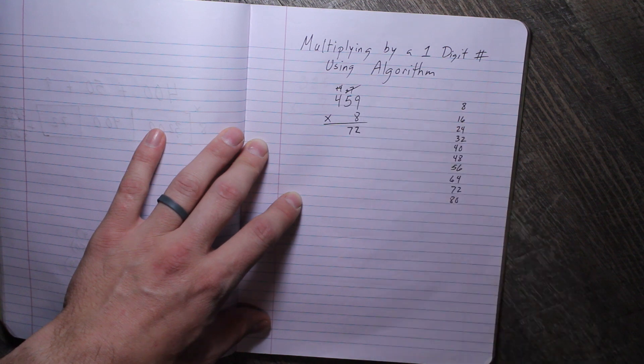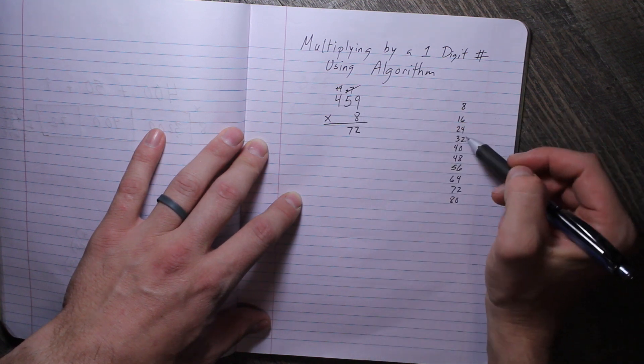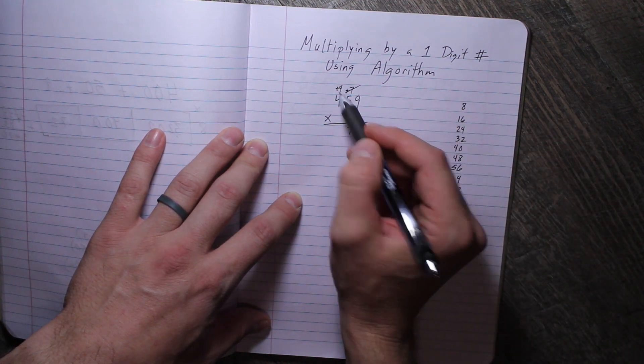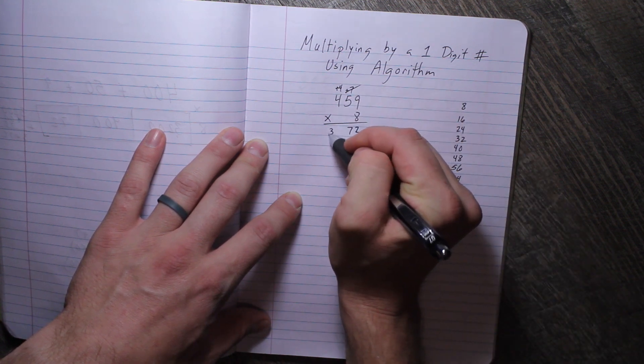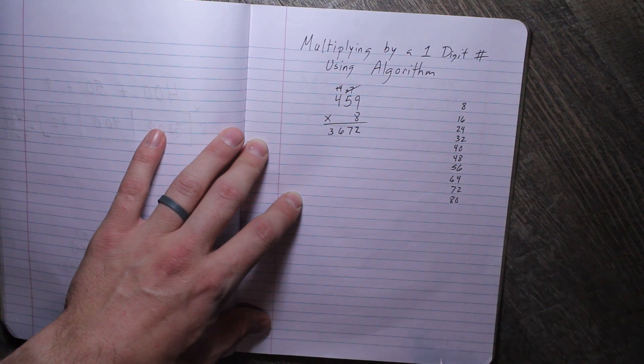We're going to cross that out because that is so last season. Now we're ready: 8 times 4 is 32, plus 4 is 36. So we have three thousand six hundred seventy-two. Awesome!